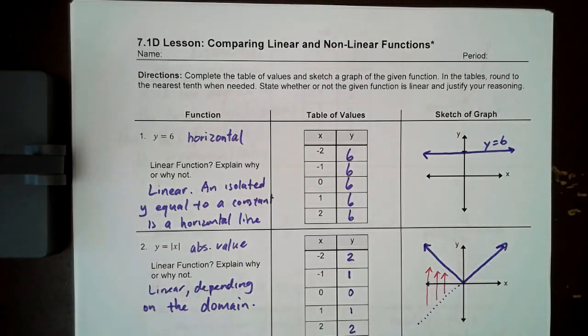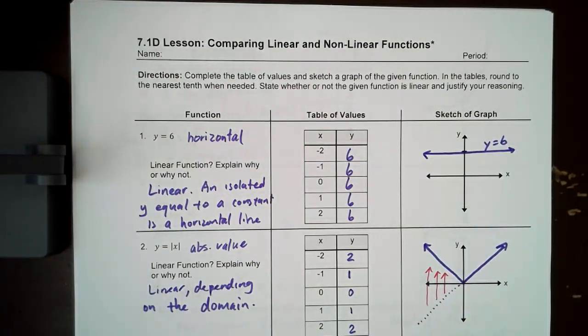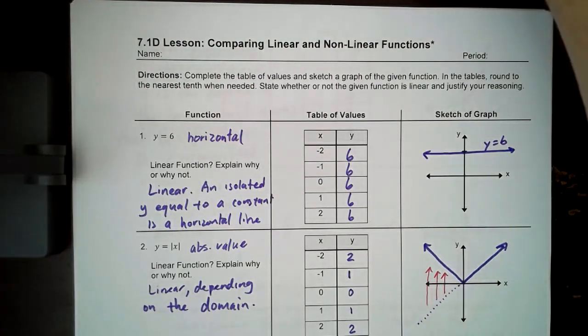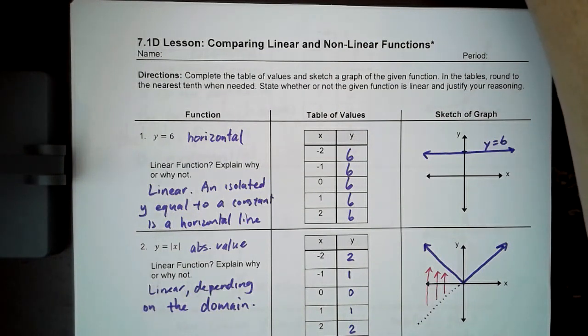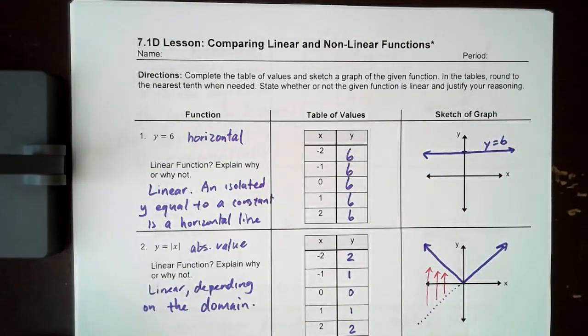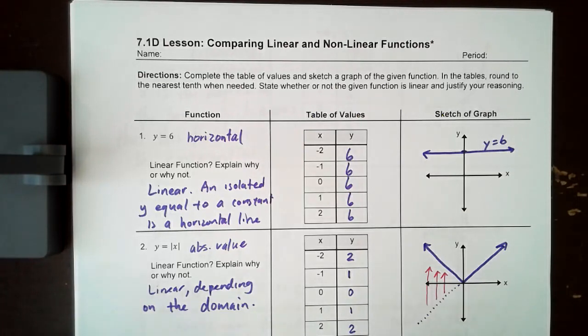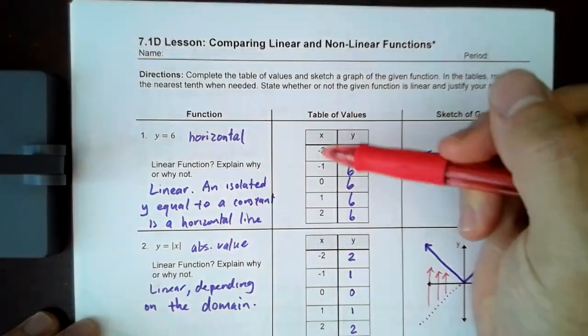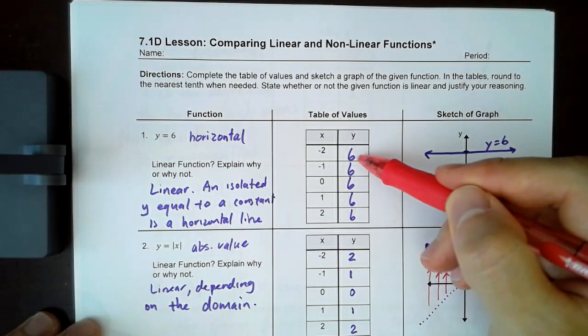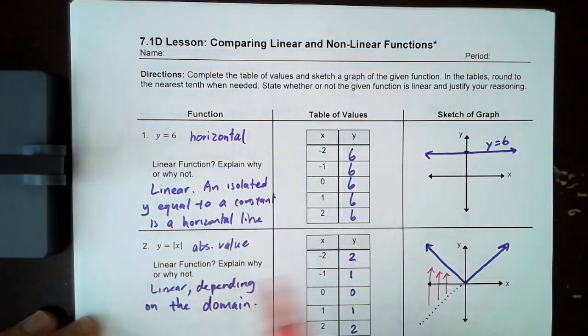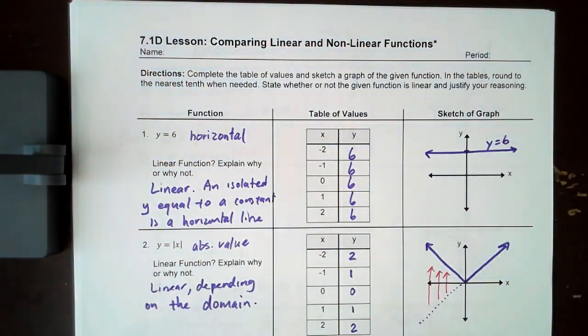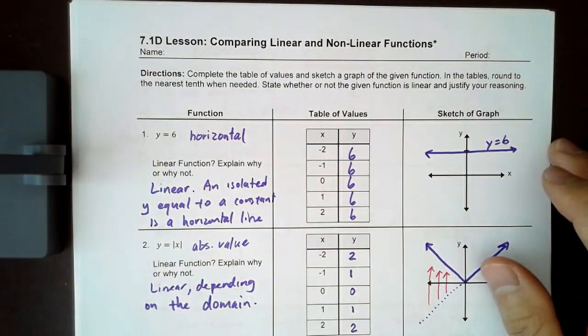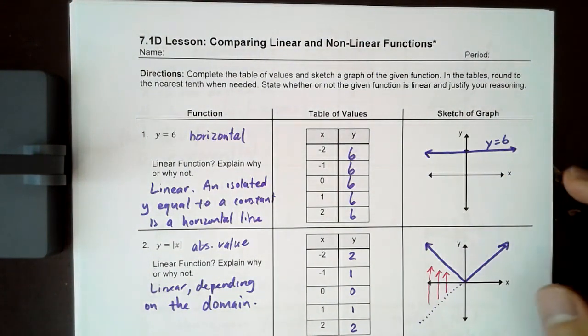So right off the bat, we have an isolated y value, and we know that an isolated y value is a horizontal line. So we kind of already know that that has to be linear, right? And you can see that all of my y values are always the same, and these values are 6, so I know it's a horizontal line. The x values are changing, but we know that there is no change in y. Why is it linear? Because whenever you have an isolated y or an isolated x, the function will be linear. It will be vertical or horizontal.